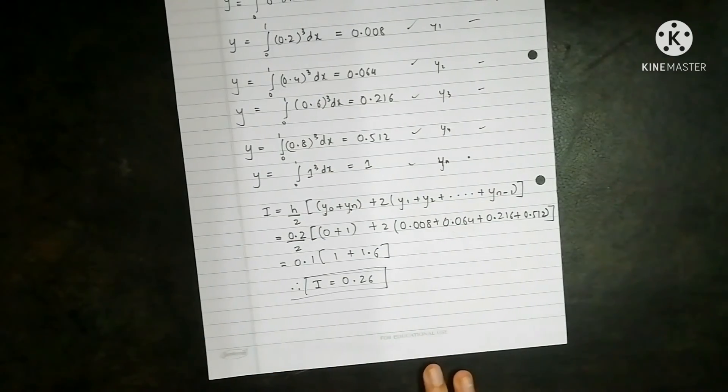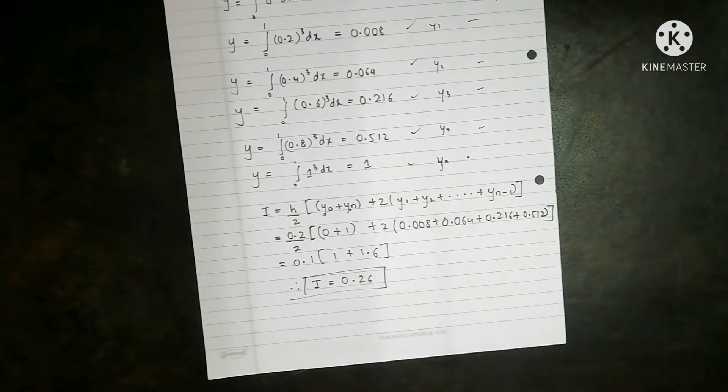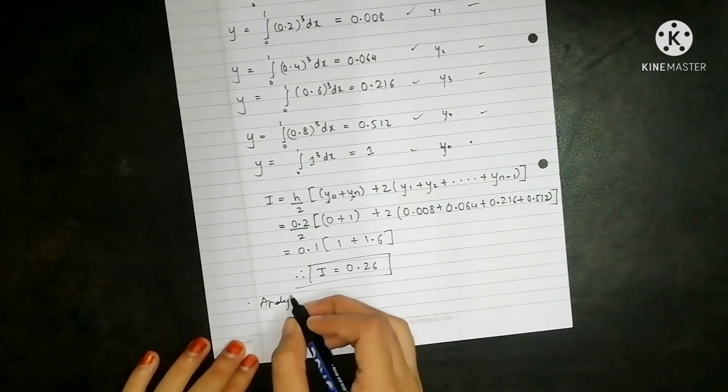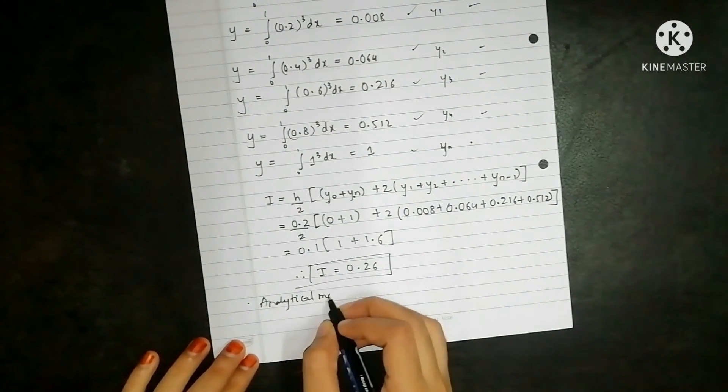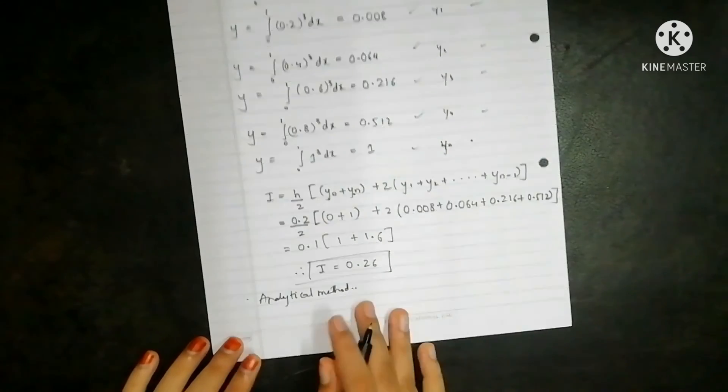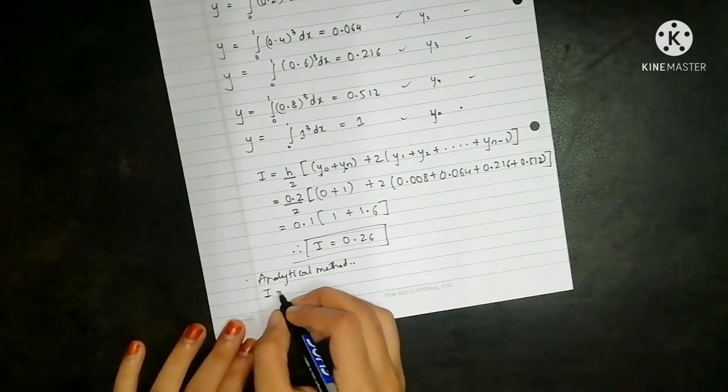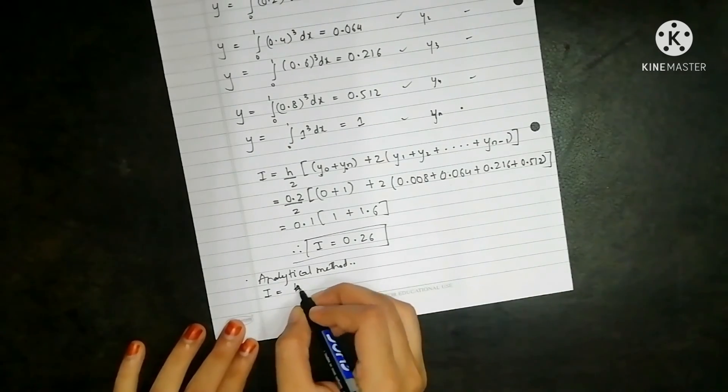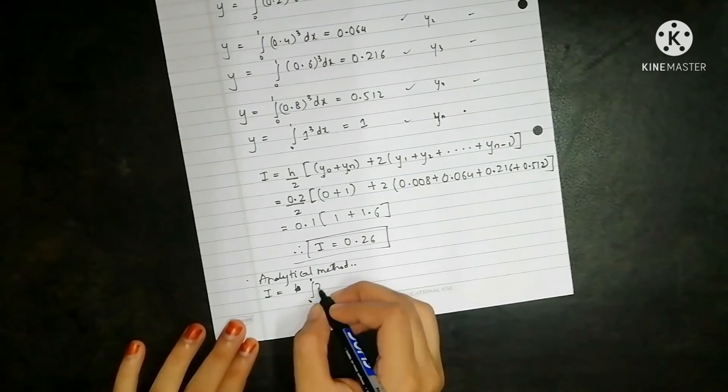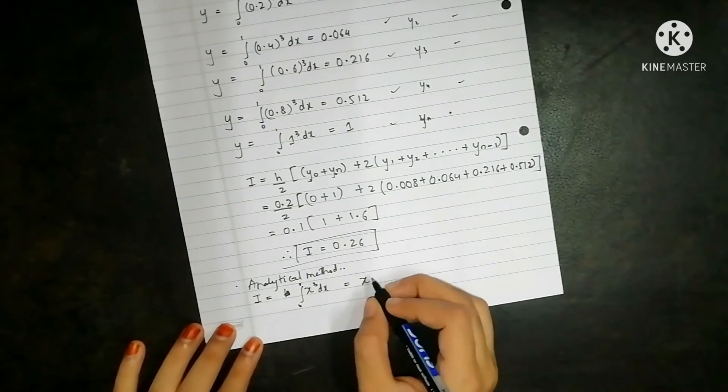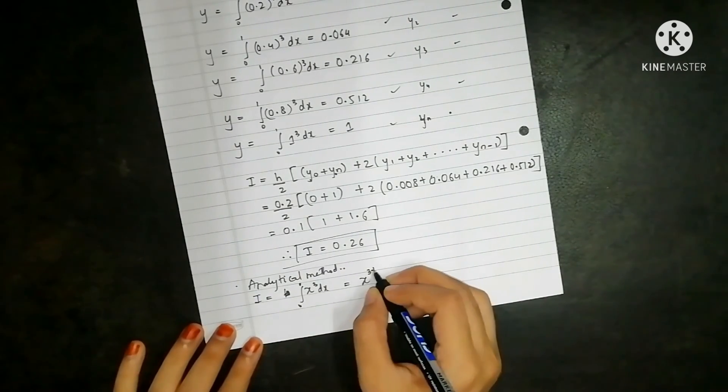In this way we have solved the equation. Now this whole thing can be done very easily by analytical method. It will hardly take me this space only. So i is equal to 0 to 1.